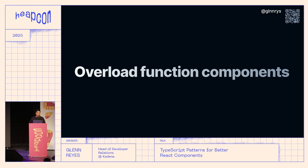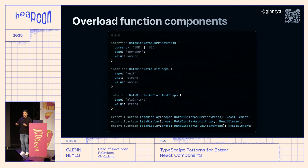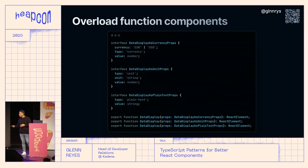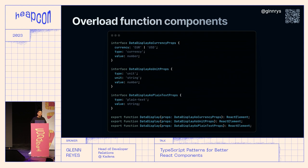Now, overloaded function components. This is a great approach, similarly to discriminated unions, for using props that are related in conjunction. For example, a DataDisplay component that shows data in different ways — as currency, as a unit, or as plain text. If you overload them, every time you use the `type` prop it enables the corresponding other props and types, which is really neat for leveraging that pattern.